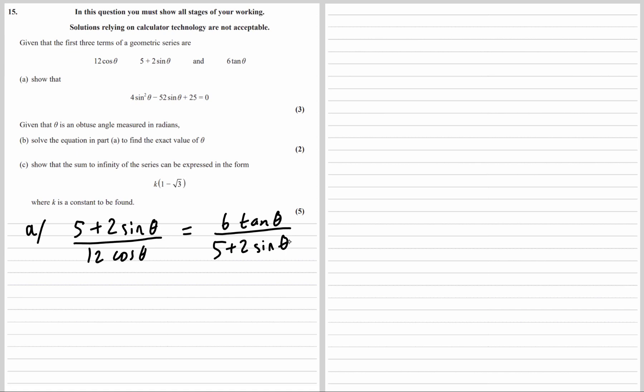Now we just need to get rid of the fractions, so we multiply both sides by the denominators. We're going to have (5 plus 2 sine theta) times (5 plus 2 sine theta) equal to 6 tan theta times 12 cos theta.